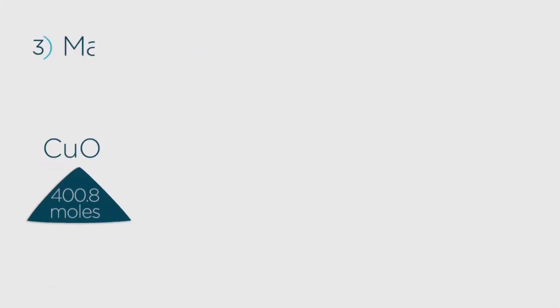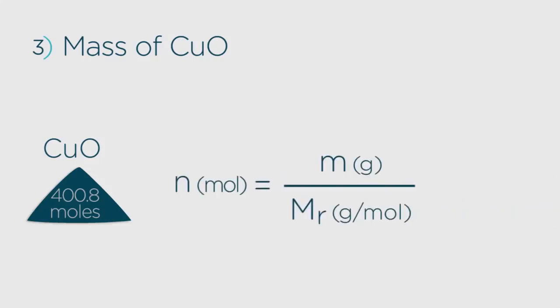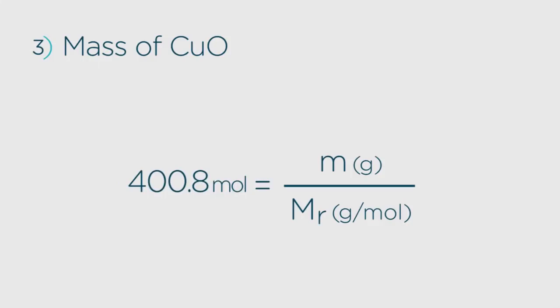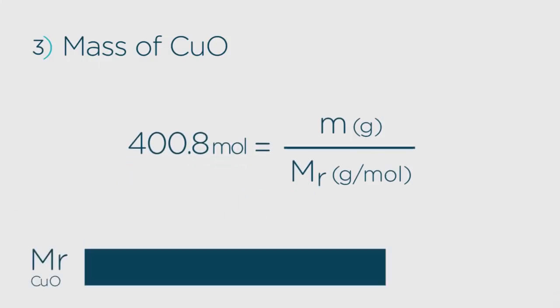Now to convert back to mass, and again this is straightforward, we just have to use the equation again. This time we know the number of moles, 400.8, and we can get the molecular mass of copper oxide, 63.5 plus 16 equals 79.5 grams per mole.